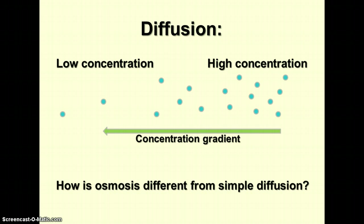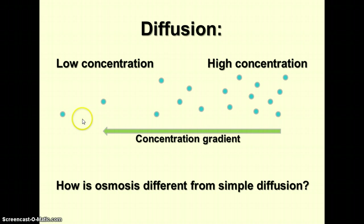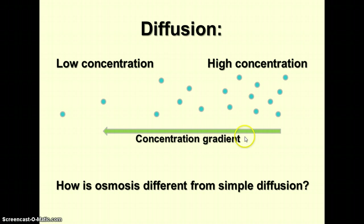Here's a concentration gradient showing diffusion. We have a high concentration of molecules on the right and a lower concentration on the left, so the gradient goes from high to low concentration — that's simple diffusion. It's like spraying perfume in one corner of a room: eventually those molecules make their way to the opposite side, spreading out evenly in equilibrium throughout the whole room.